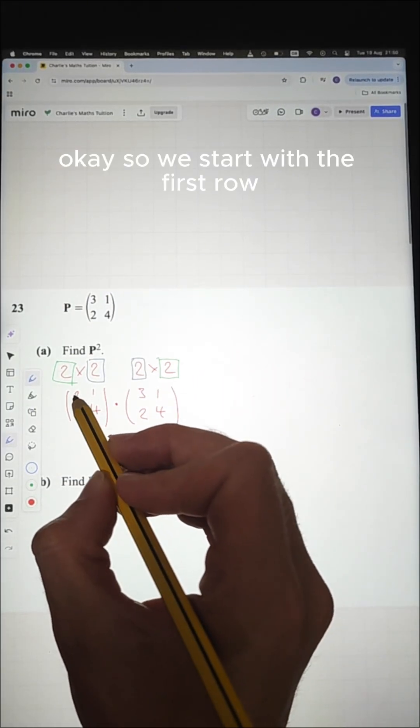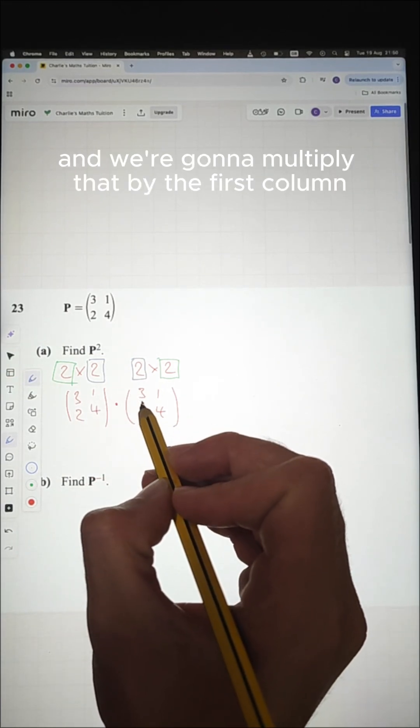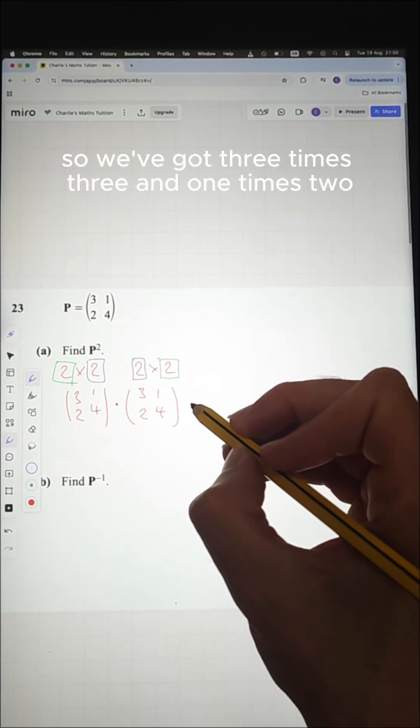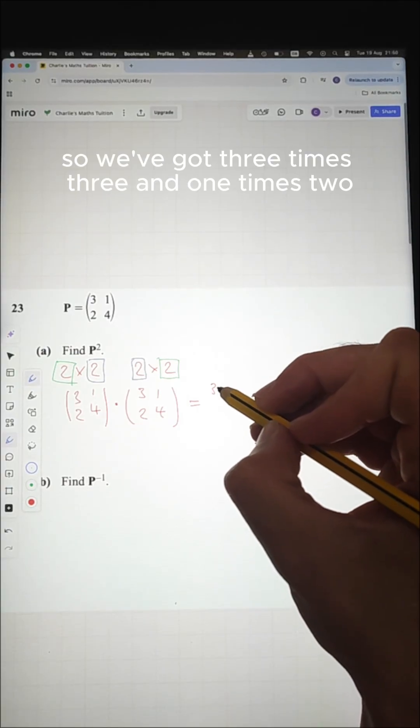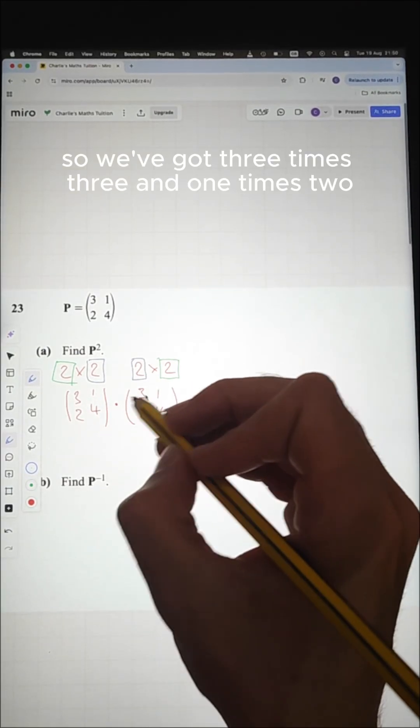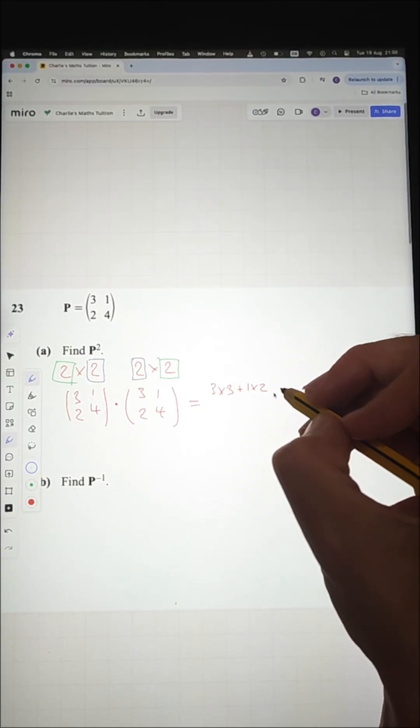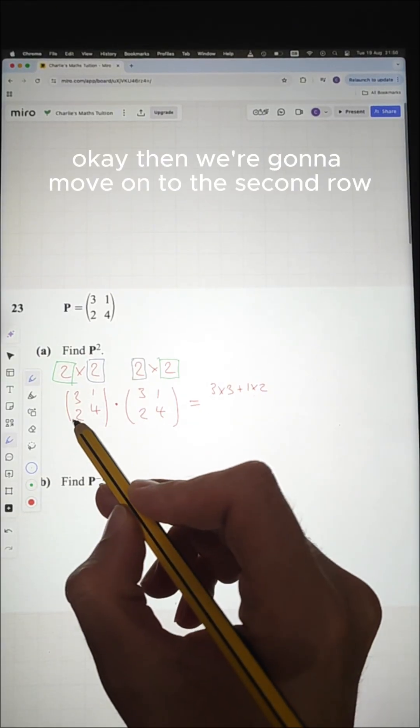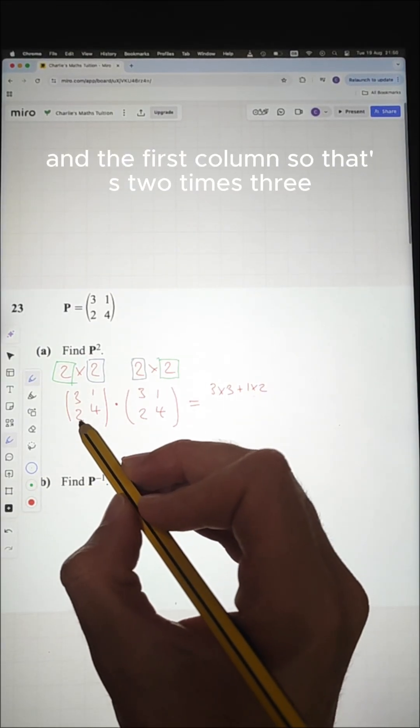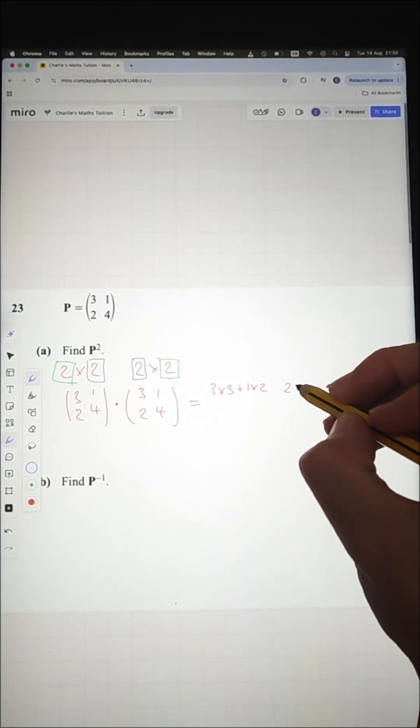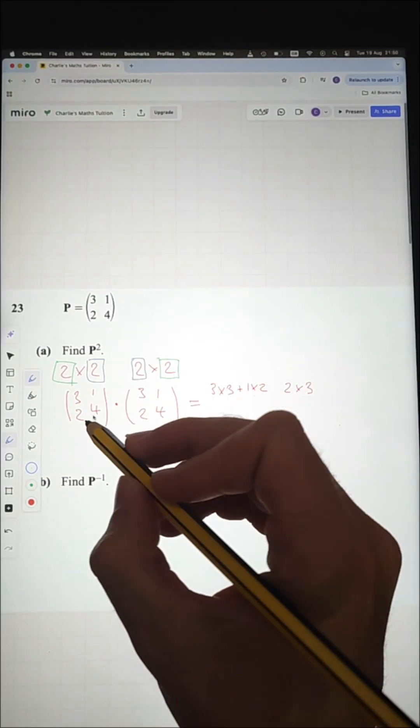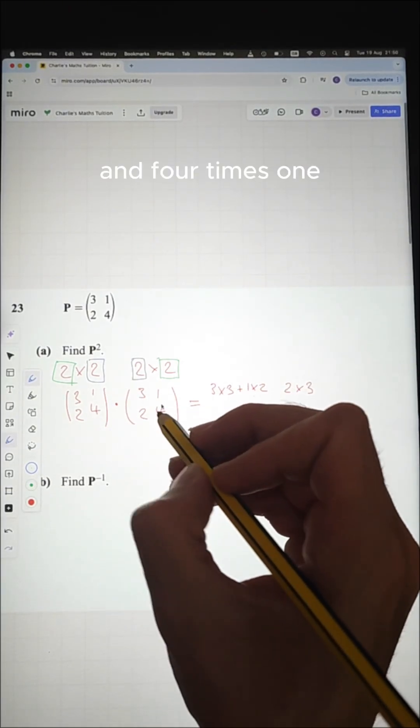Okay, so we start with the first row and we're going to multiply that by the first column. So we've got three times three and one times two. Okay, then we're going to move on to the second row and the first column. So that's two times three, four times three and four times one.